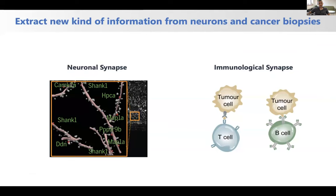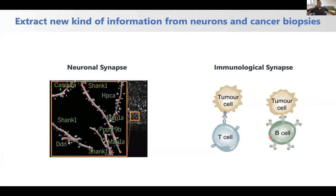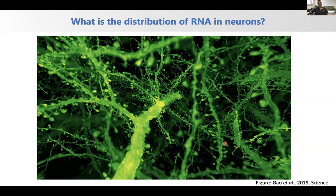In our lab, we are using expansion sequencing technology in two domains: the study of neurons and the study of cancer biology. In the neuron application, we most care about the physical connection between neurons — the synapse — which can be nanometer in size, and we want to map genes in these regions. Similarly, in cancer biology applications, we care about the immunological synapse, the physical connections between tumor cells and immune cells.